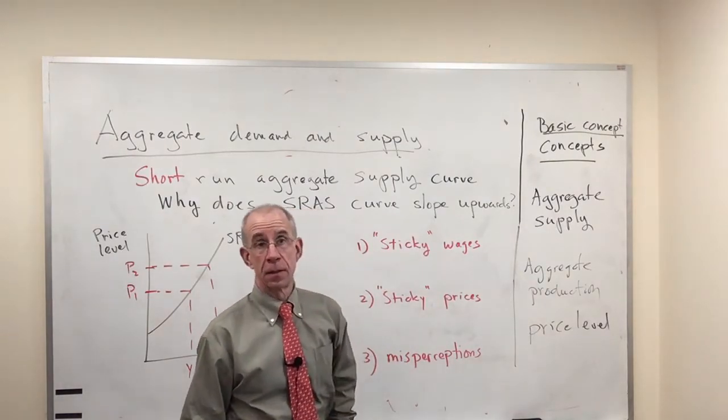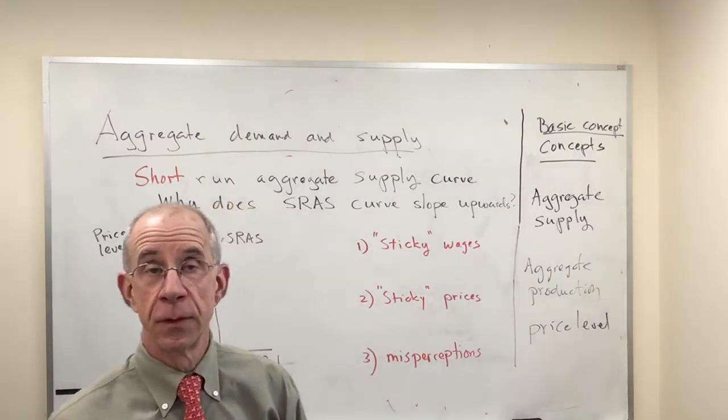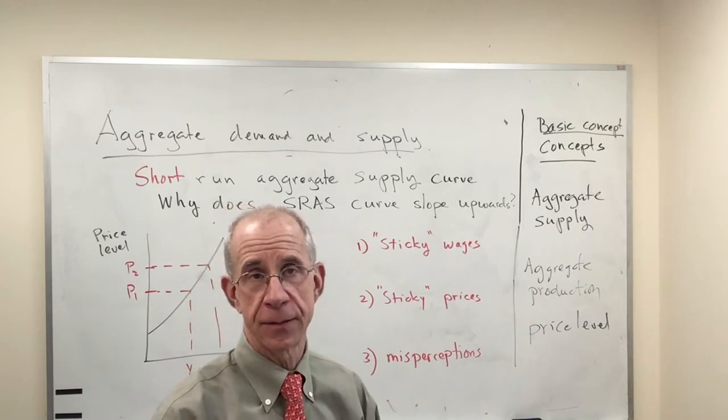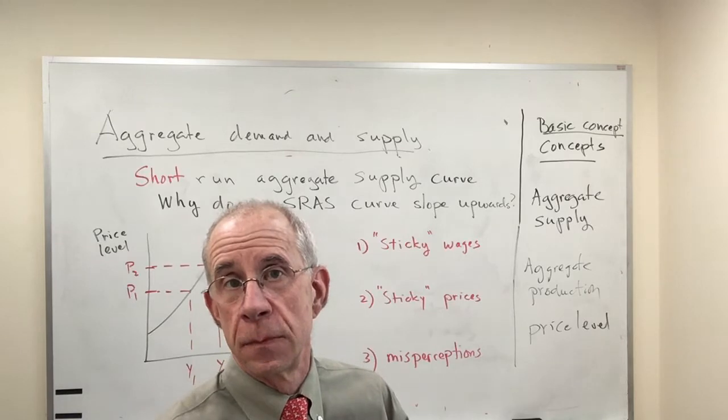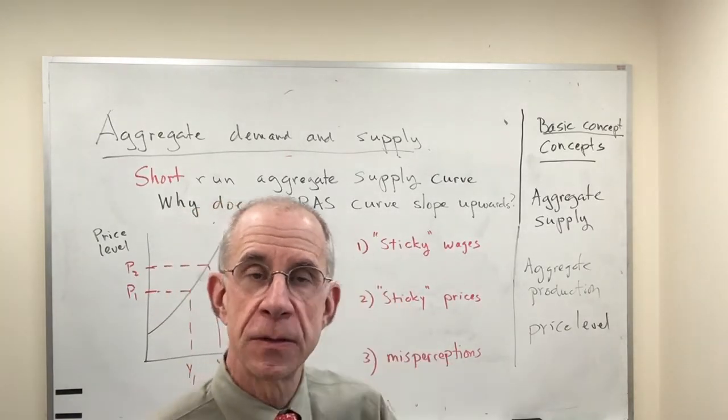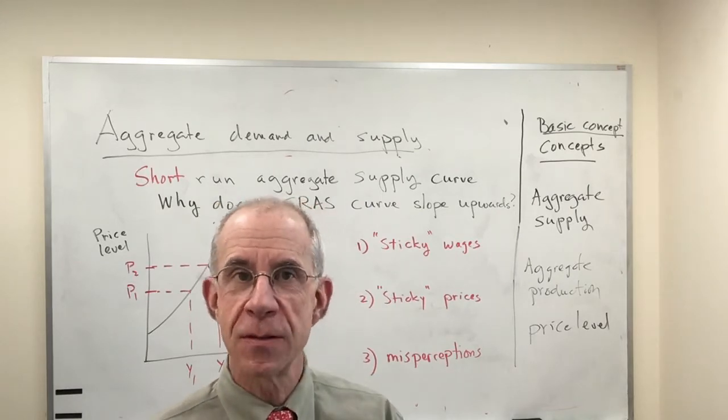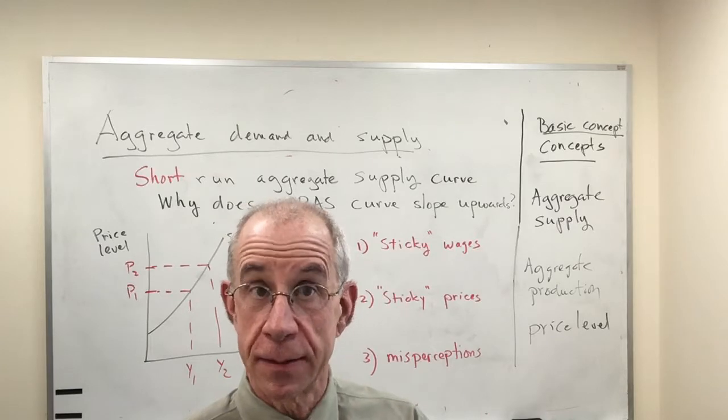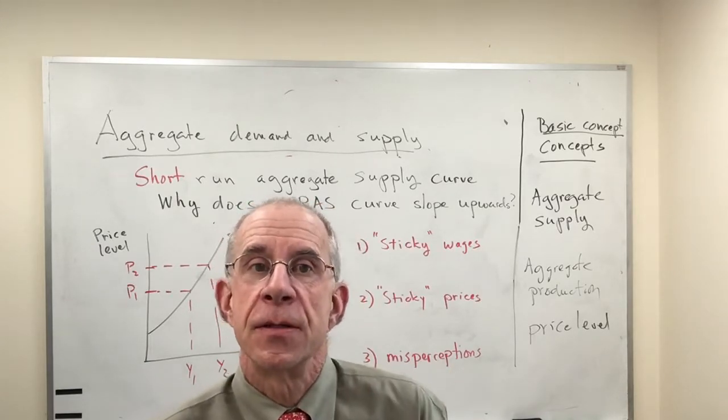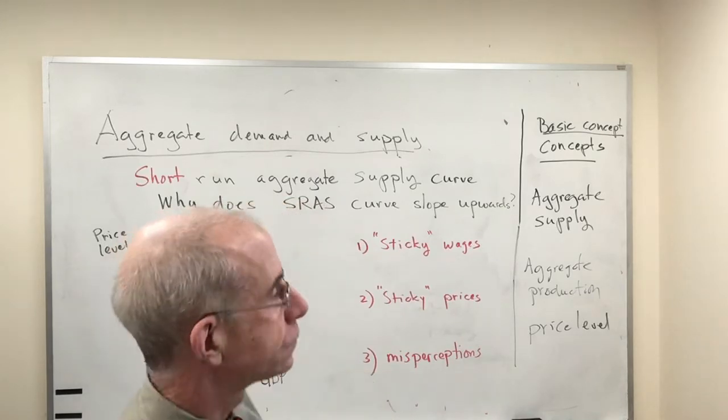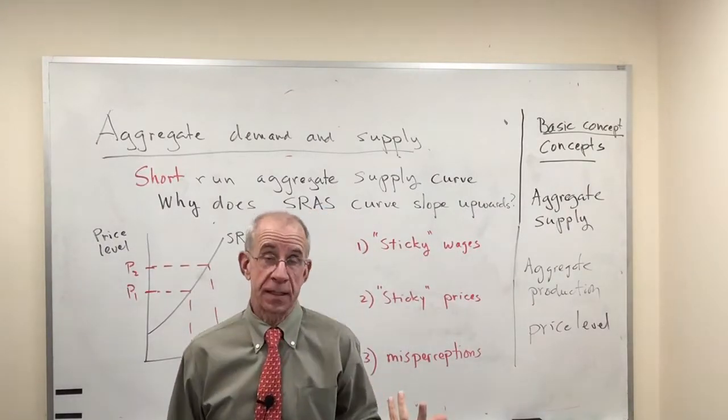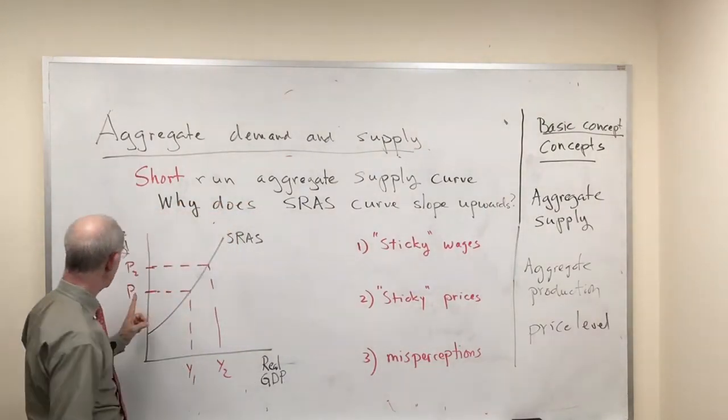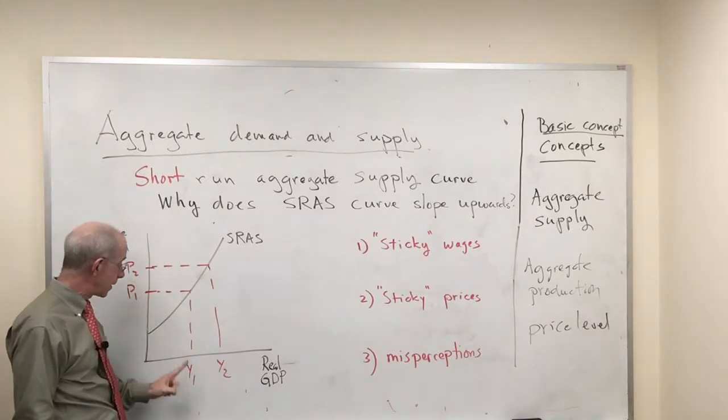The first one has to do with the often observed reality that wages are slow to adjust. People have contracts, labor contracts. People have an annual employment review, so they only get an increase or change in their salary once a year. There are lots of reasons why it may be difficult for wages to change overnight. They can sometimes be much slower to change than the prices of final goods. So let's imagine that you have these wages for a significant part of the economy that can't adjust quickly. They're sticky.